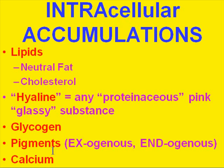Pigments can also accumulate within cells. If the pigments are normally found in the body — like hemosiderin, melanin, bile, or lipofuscin — they are called endogenous. If they are pigments found outside the body, like soot, anthracotic pigment, or tattoos, they are called exogenous. Calcium also accumulates within dead, dying, and injured cells and can actually form crystals, which has a characteristic appearance.